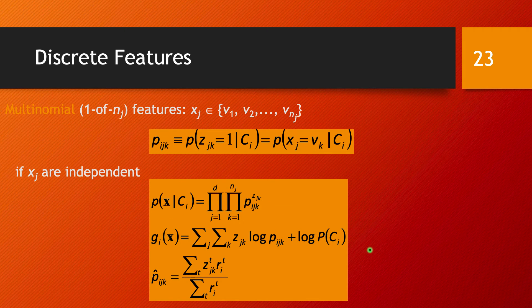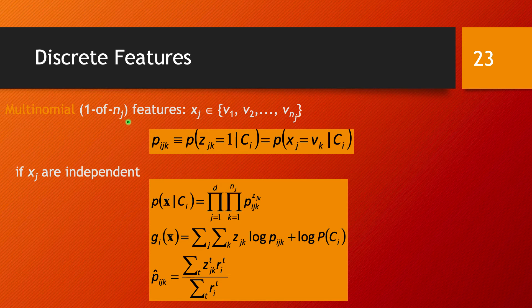Now in the general case, we have a multinomial set of features. This means that feature x_j has more than just two values—more than just 0 and 1. In fact, for feature j, we have n_j number of values, and the value can be any one of these labels: v_1, v_2, all the way to v_{n_j}.